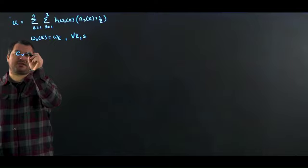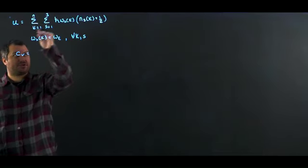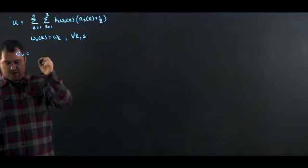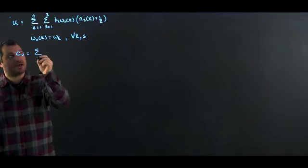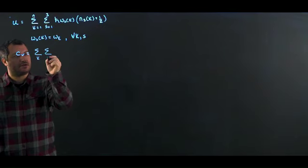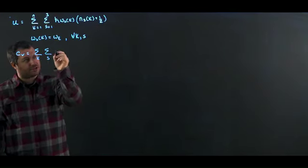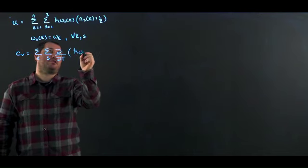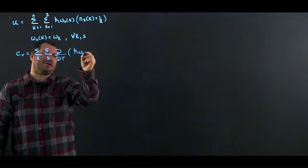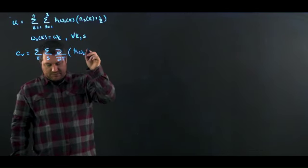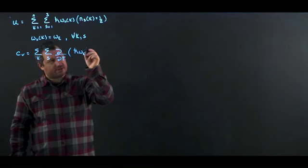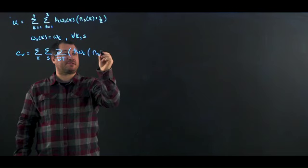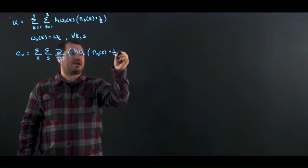Then our specific heat, which is the partial derivative with respect to temperature of the energy function, uses our oscillator function. We're going to take the double sum and take the derivative with respect to T of ℏ omega_E — and instead of omega_s(k), it's omega_E — and this is going to have the term N_s(k) plus one-half after it.